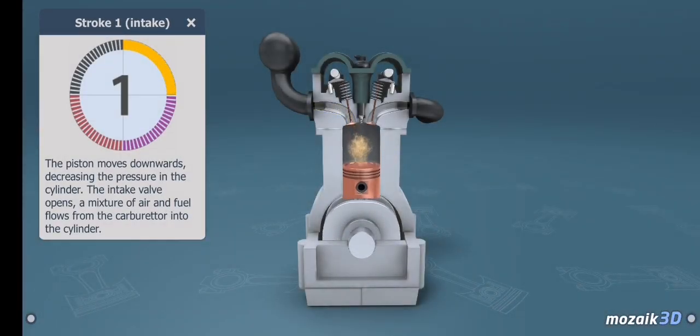The first stroke is intake. The piston moves downwards, decreasing the pressure in the cylinder. The intake valve opens and a mixture of air and fuel flows from the carburetor into the cylinder.